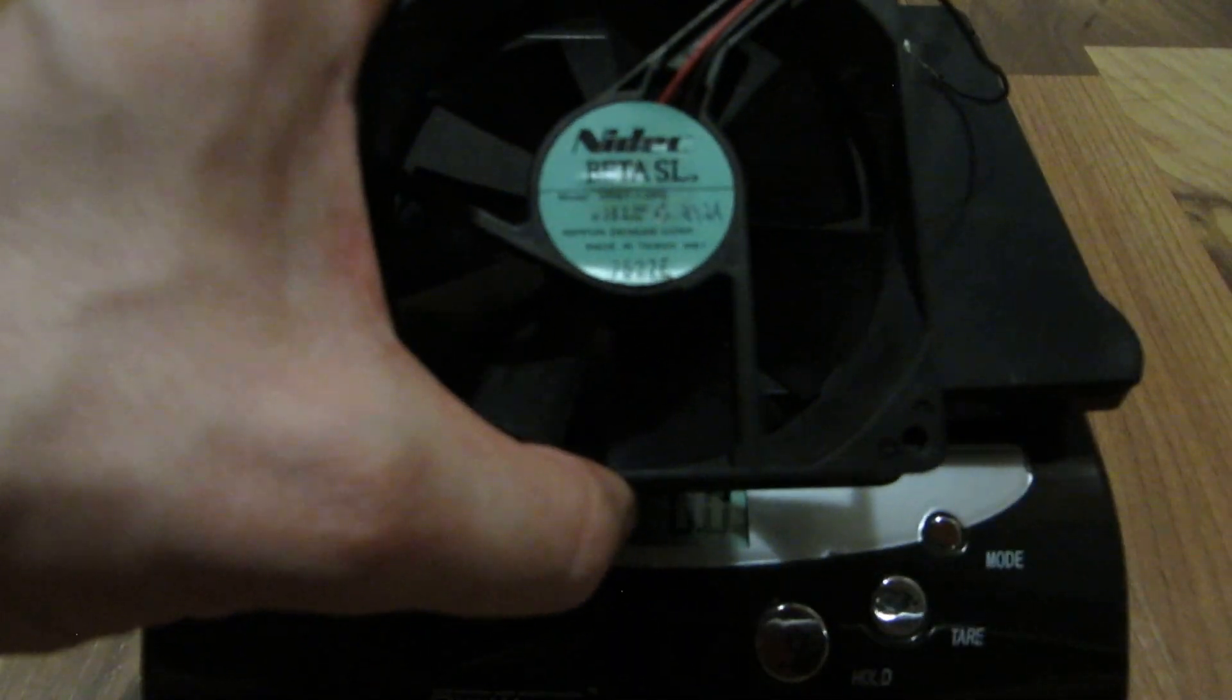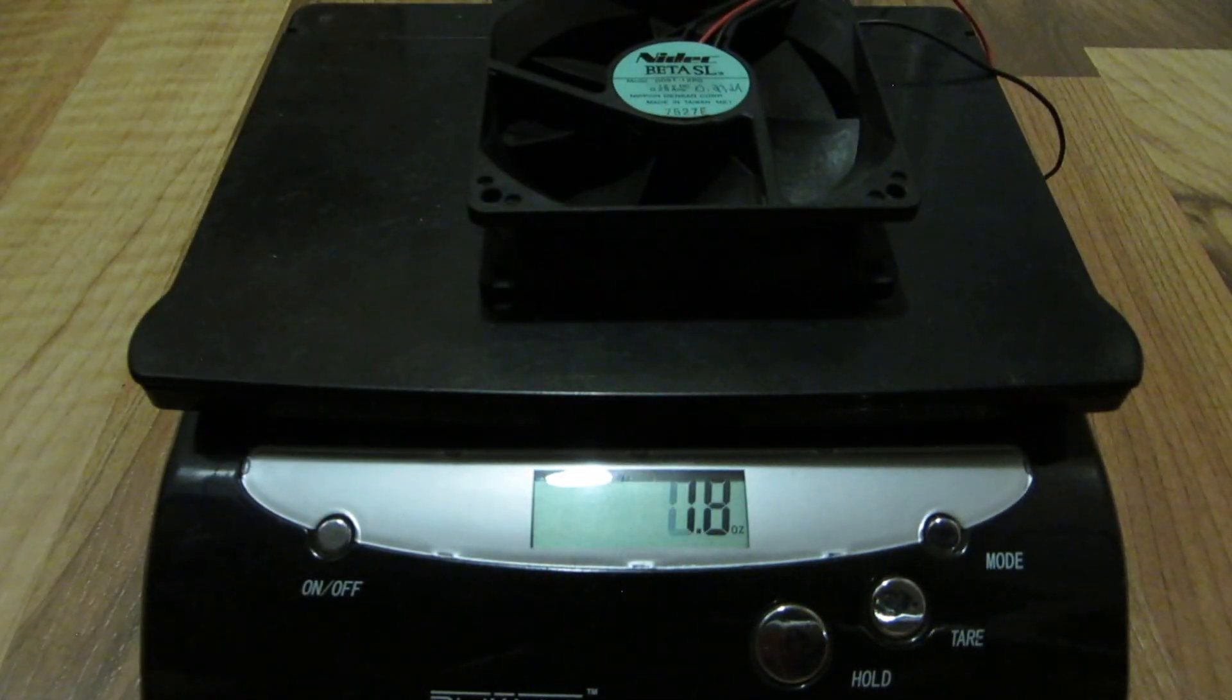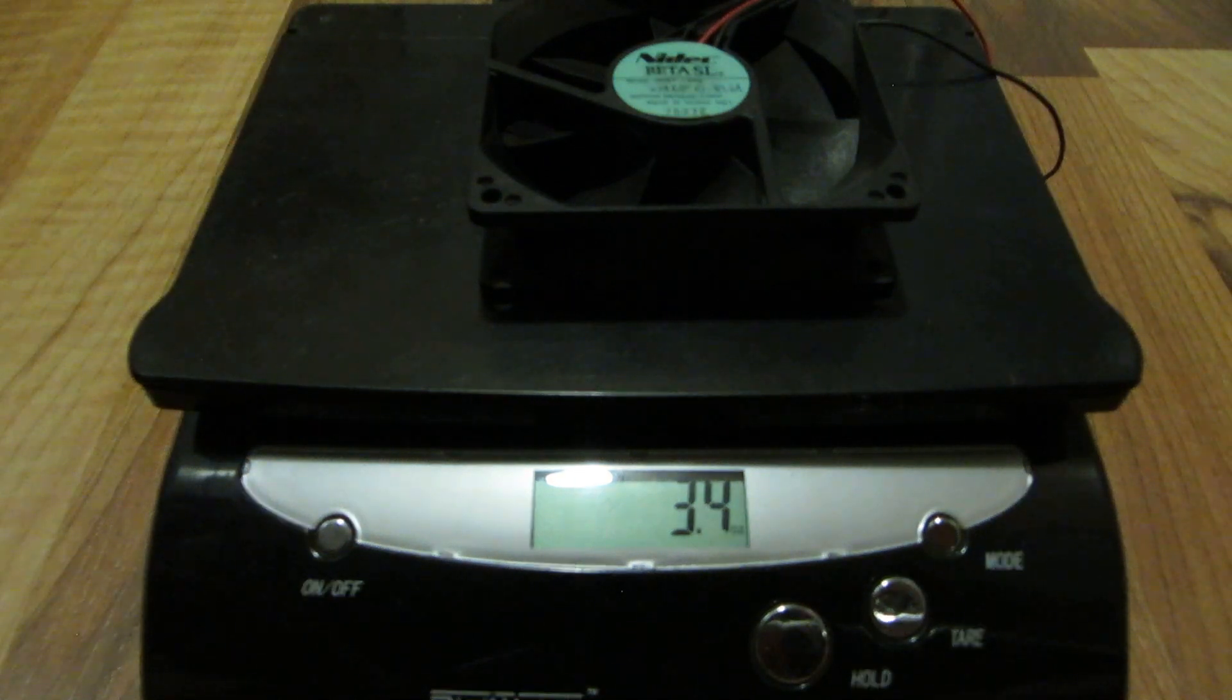A Nidec Beta SL at 0.29 amps. Also 90 by 90 by 25, at 3.4 ounces.